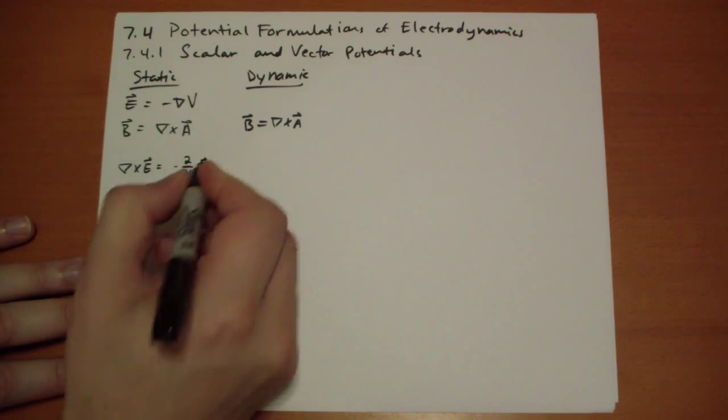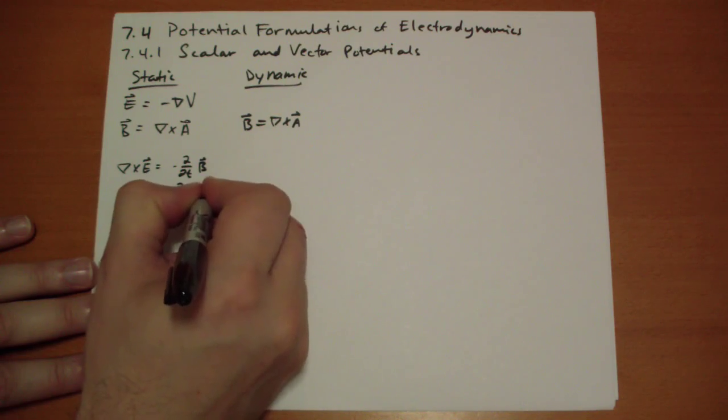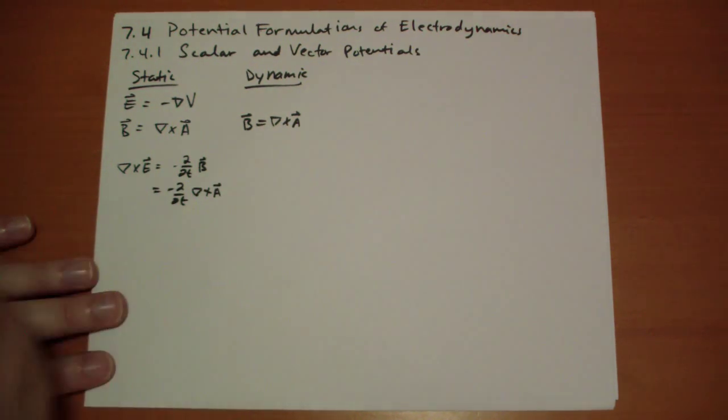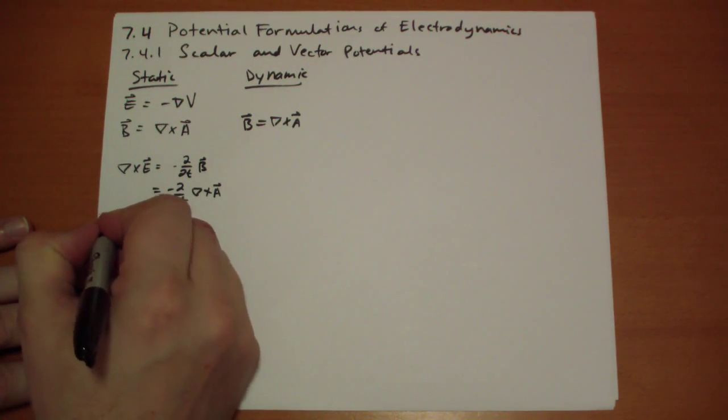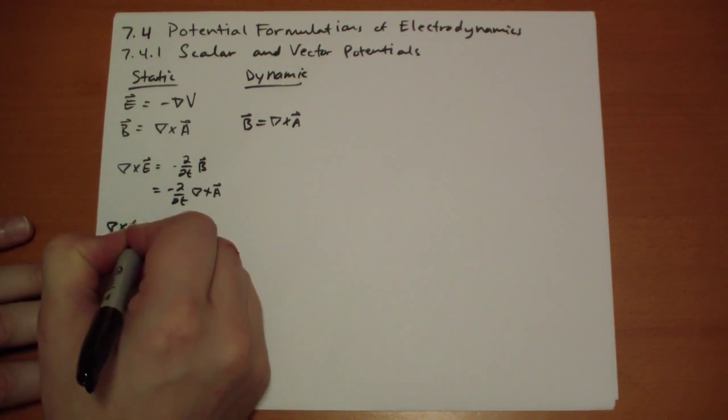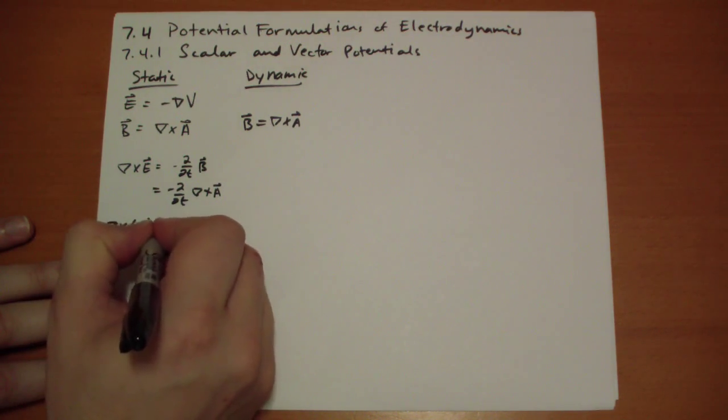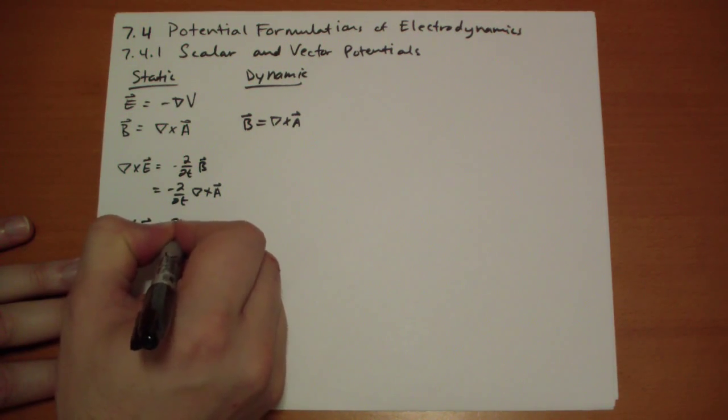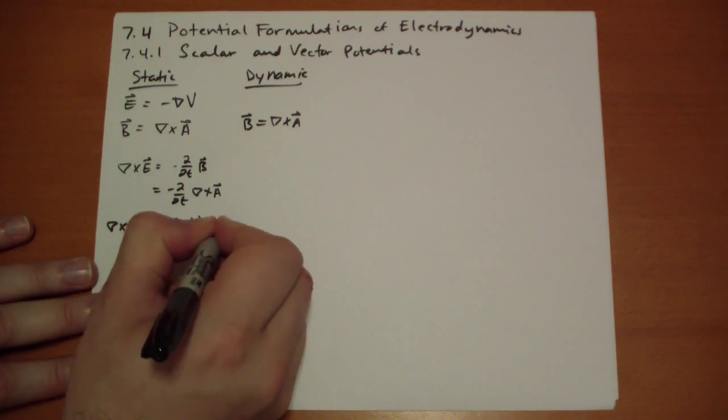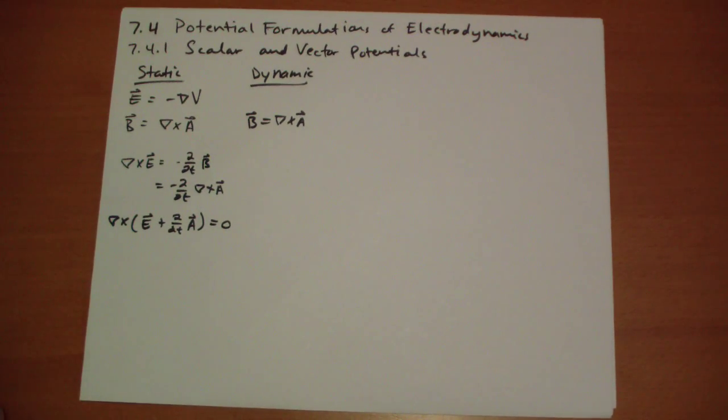Well, that's just minus the time derivative of the curl of A. And we can distribute that to the A vector, pull it to one side, and so we have the curl of the E vector plus the time derivative of the A vector, and that gives us 0. And so now we have something where the curl is now 0.